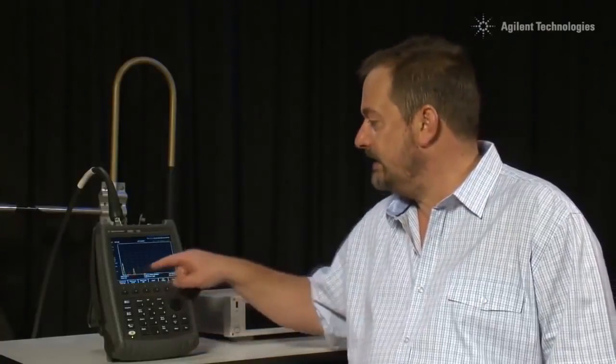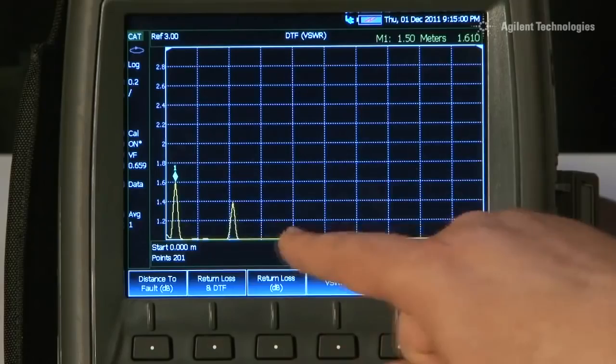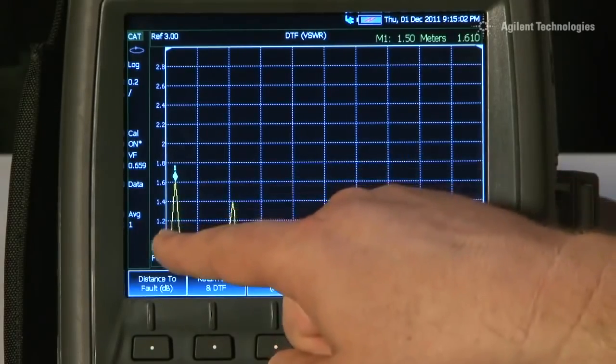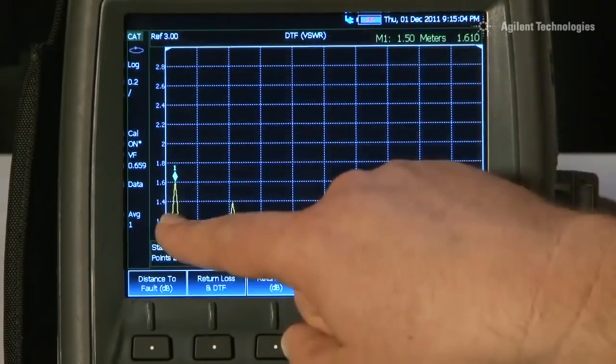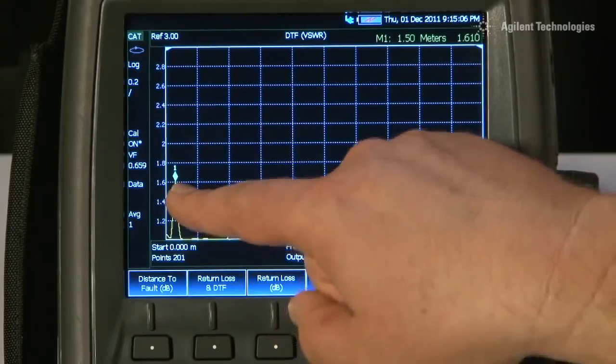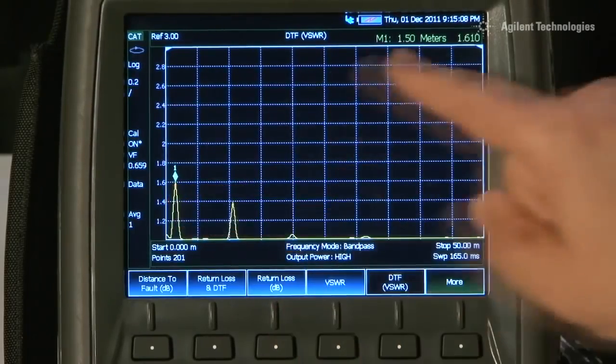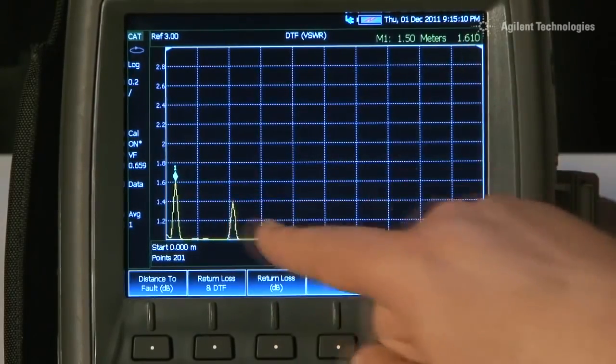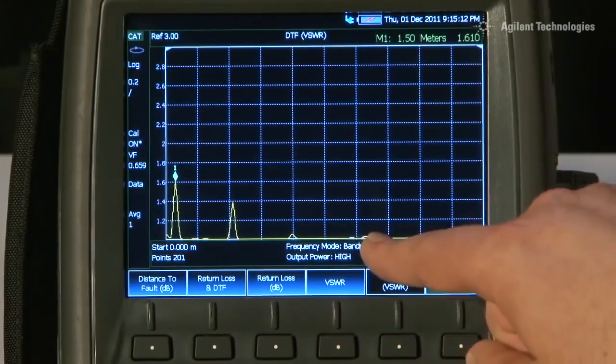Now you can see exactly the same trace with the four peaks but now with a scale on the Y axis of VSWR. You can see that even the worst peak here has a VSWR of about 1.6 and the other peaks are below 1.5, which may be acceptable for your installation.